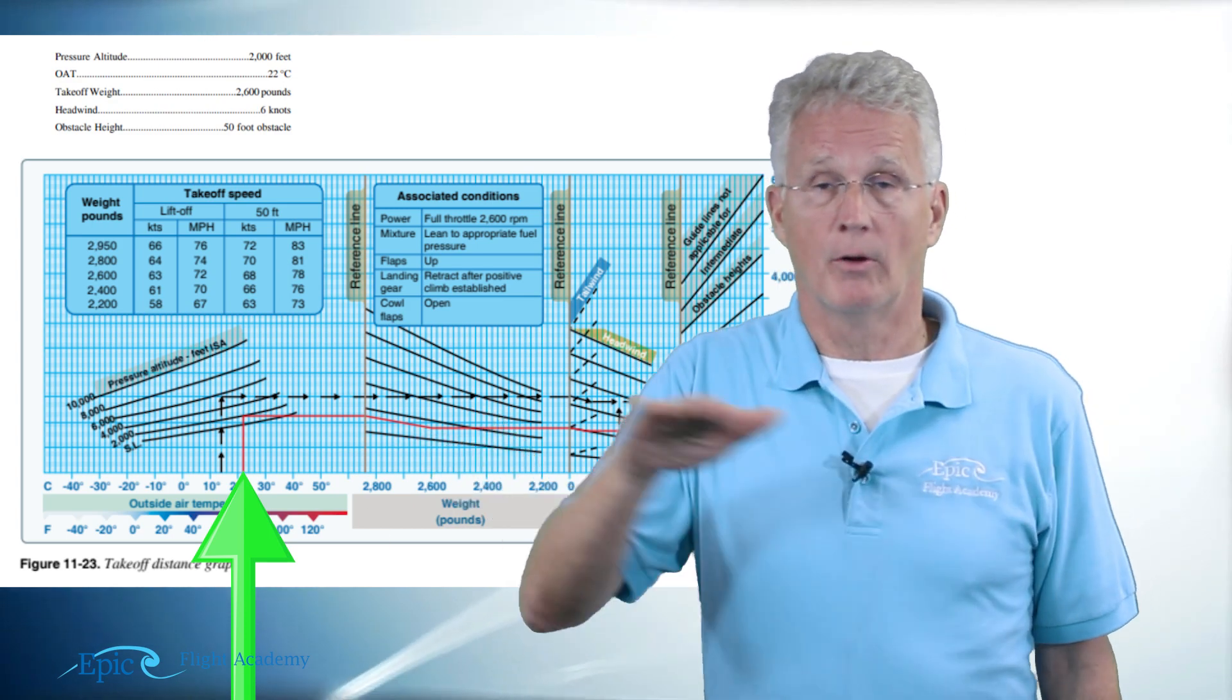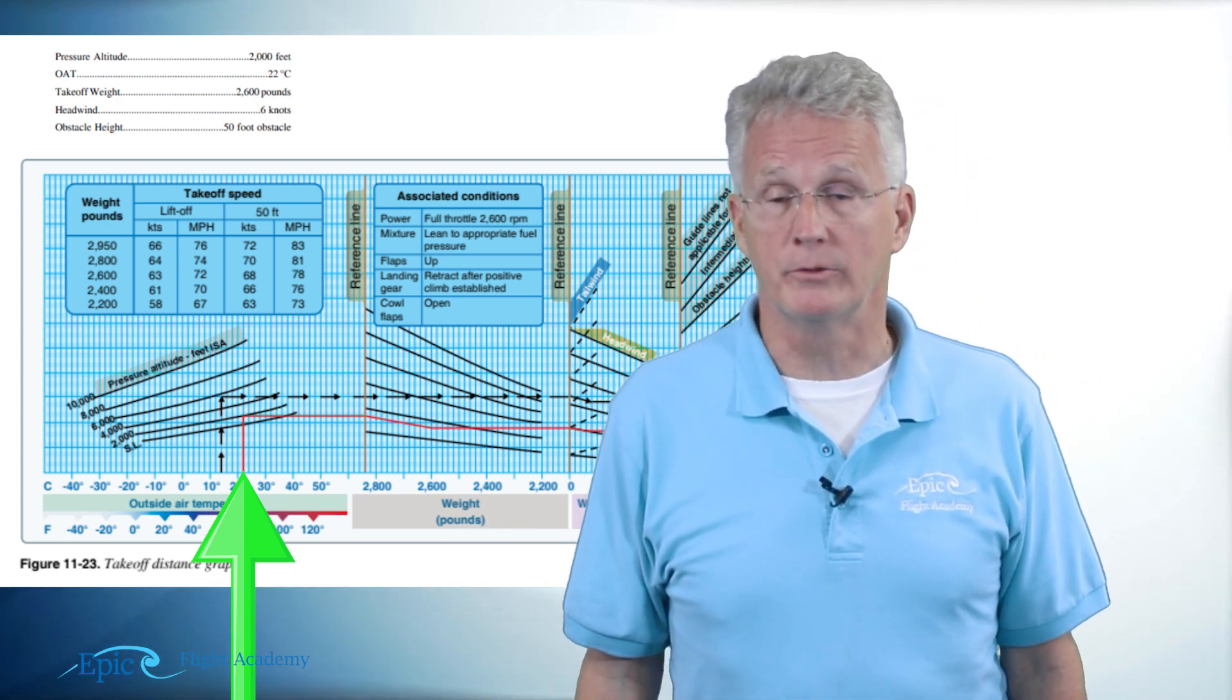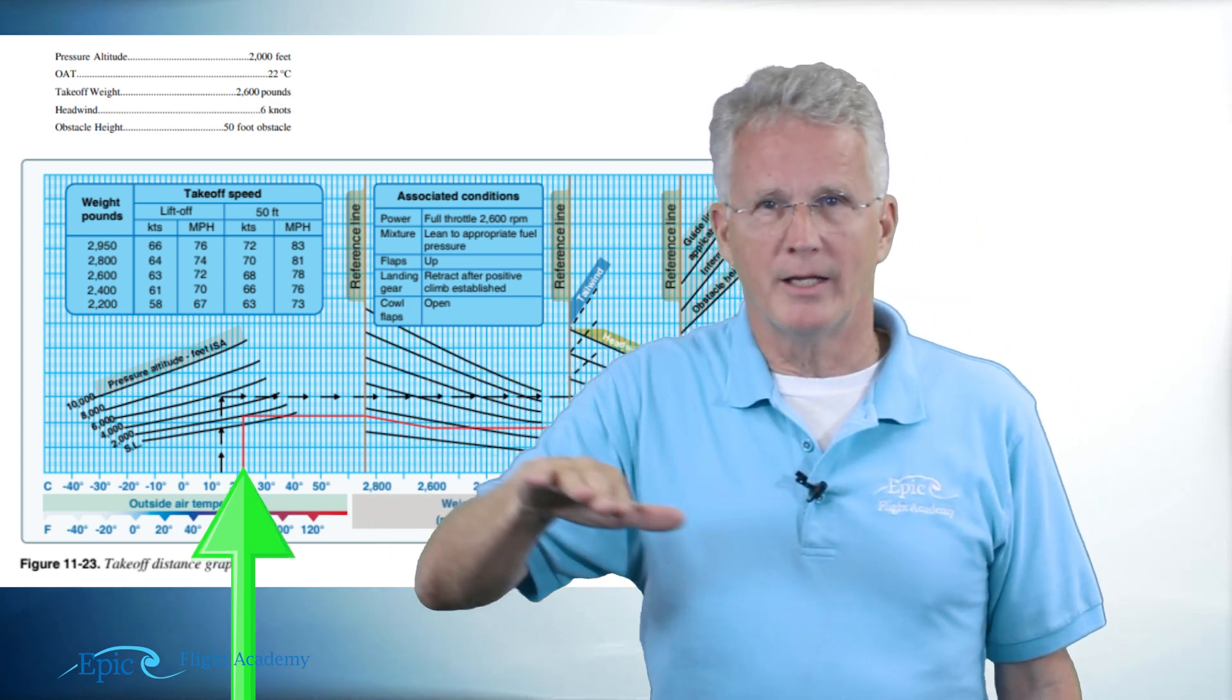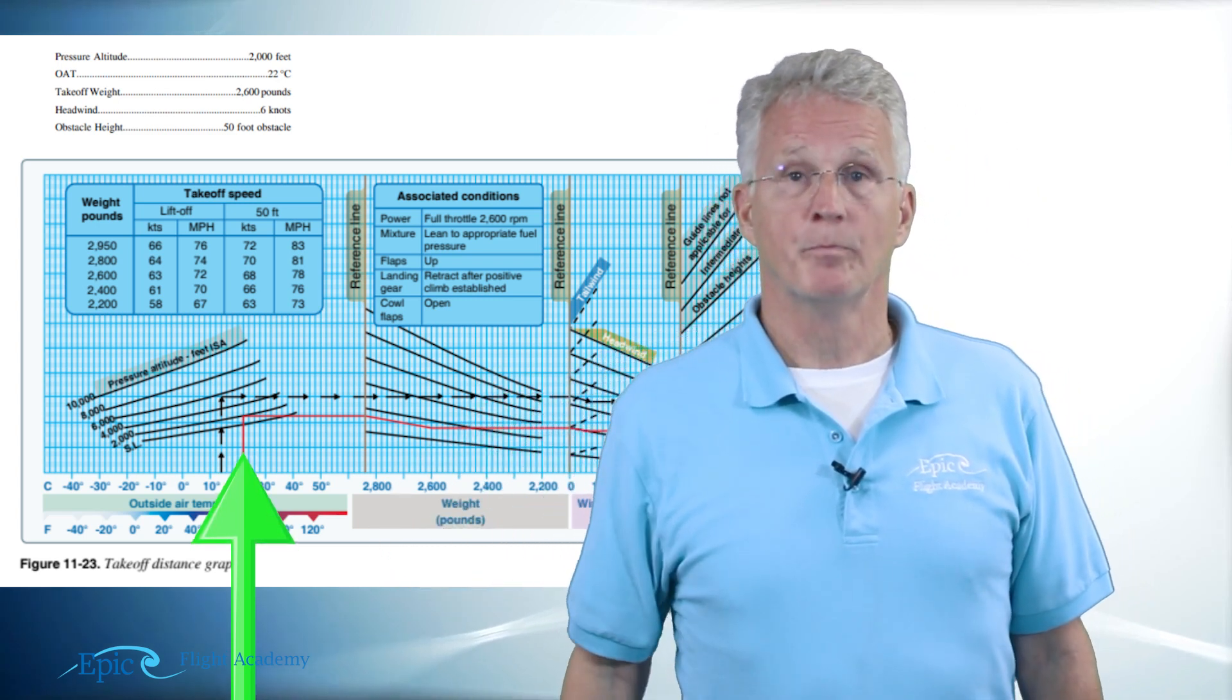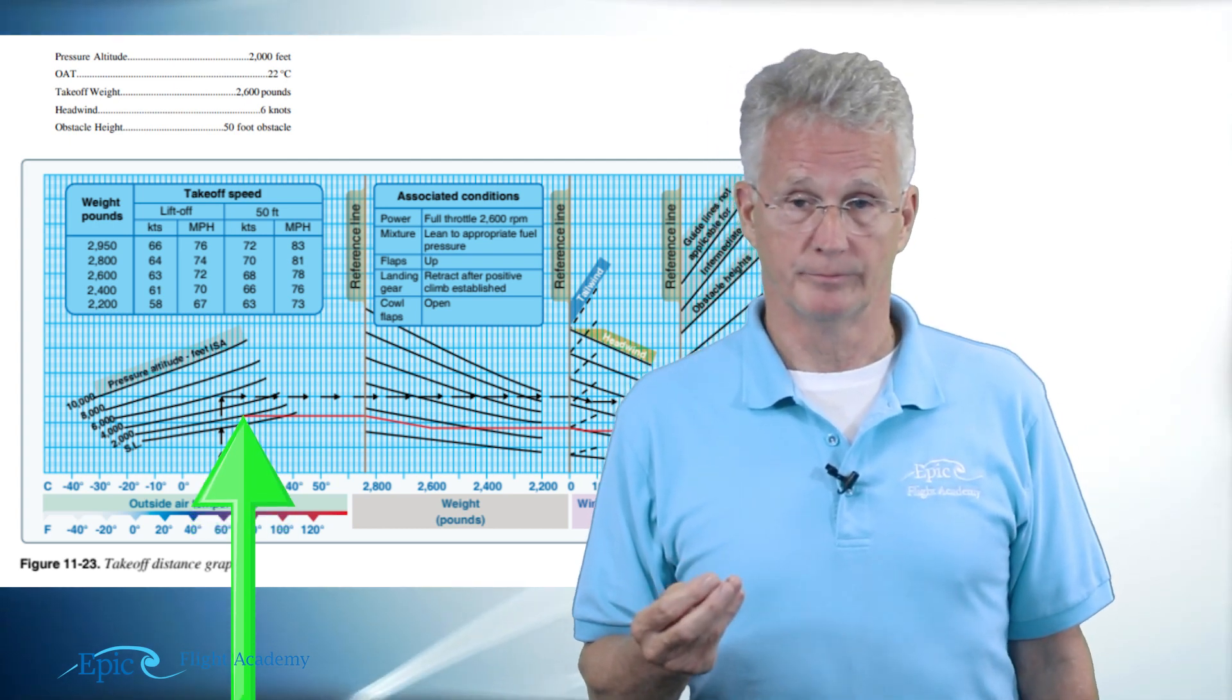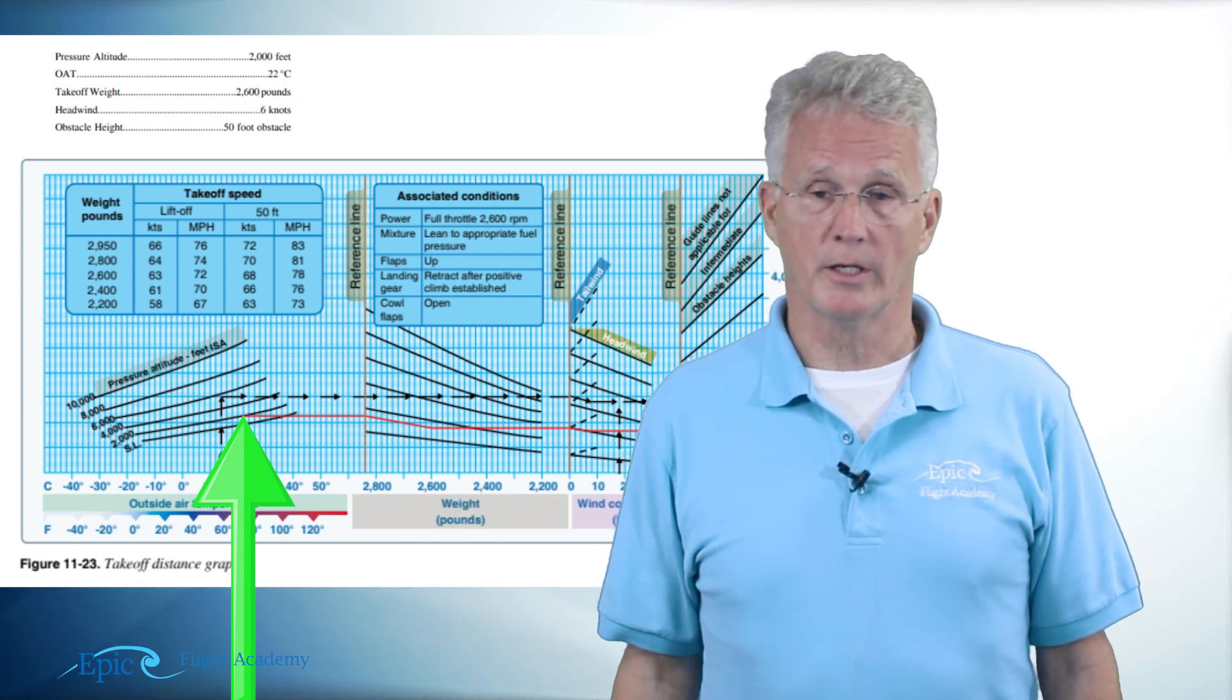So remember up, over, and follow the slope. As I come up from my 22 degrees Celsius I'm seeing some pressure altitude lines on kind of a curve there. I'm going to come up to my pressure altitude which in my example is 2,000 feet. Now here is where I go straight over. I'm just going to go straight over to the next chart.